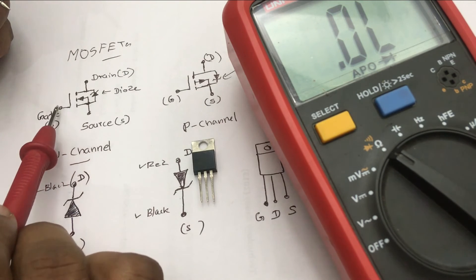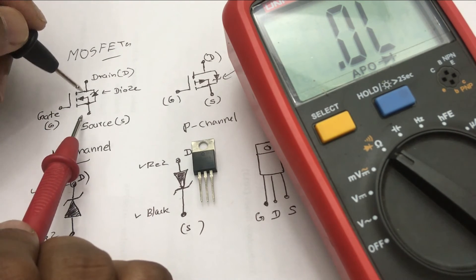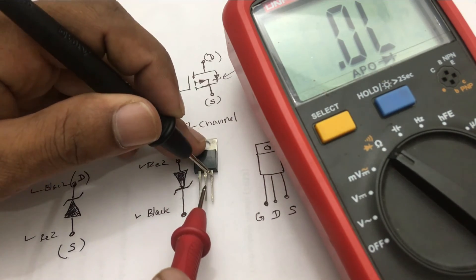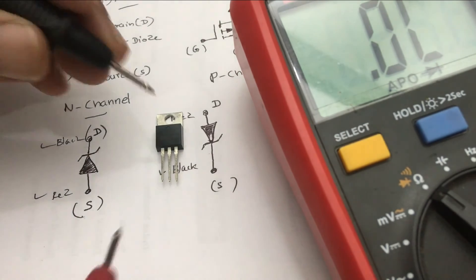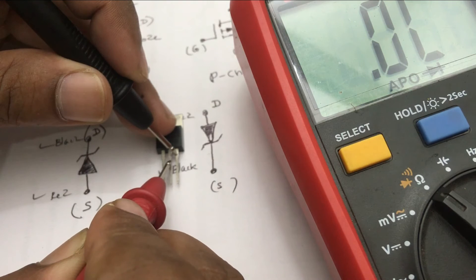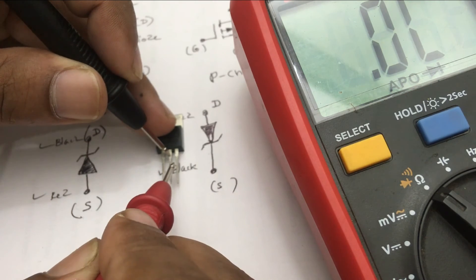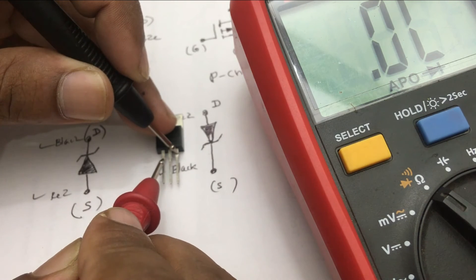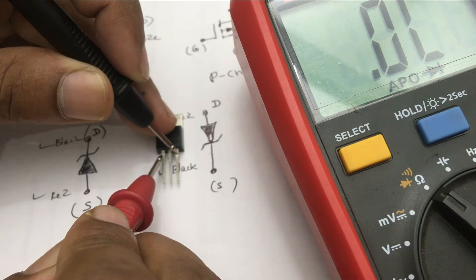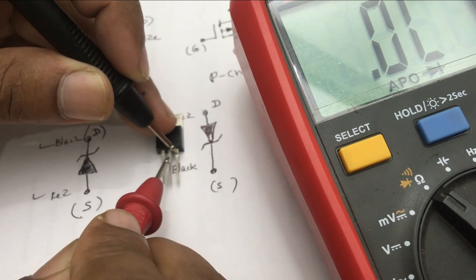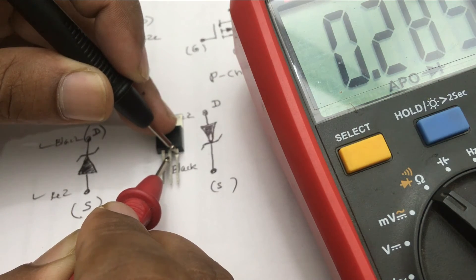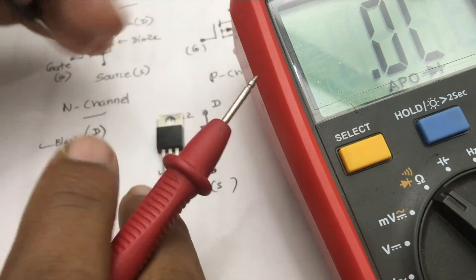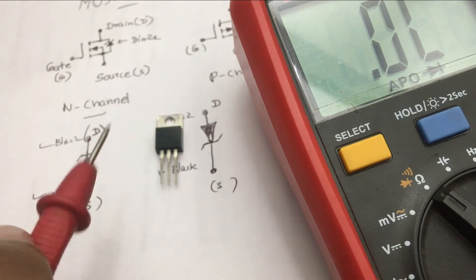Now shall we move to checking the gate. Since this is an N-channel MOSFET, while connecting the ground pin to source, if you connect positive voltage to the gate, there will be a connection between source and drain. You will then see a reading in both directions. I connect red to source and black to drain — there is a reading. Now red to drain and black to source — no reading. To check the gate, while connecting the black probe to source, I connect the red to gate. This will activate the MOSFET. Now without moving the black probe, I connect red to drain. This time you can see a reading on the multimeter, which was not shown before. This means we have activated the MOSFET and it is working well.